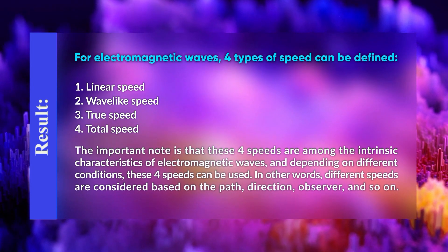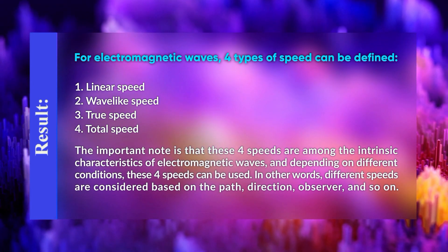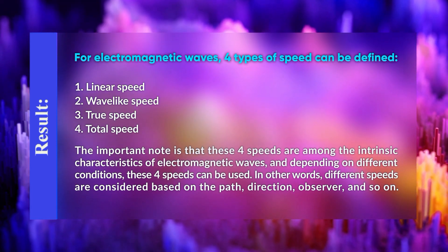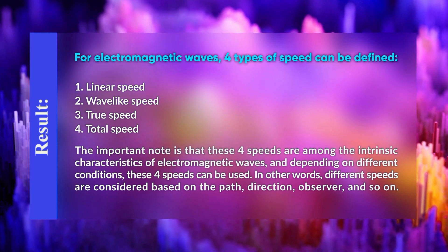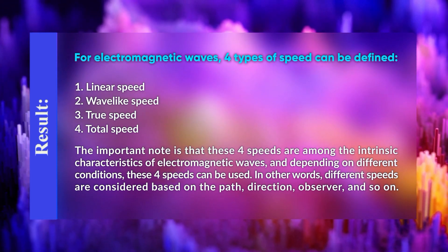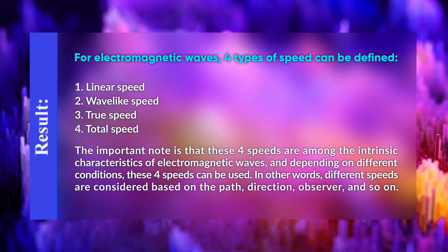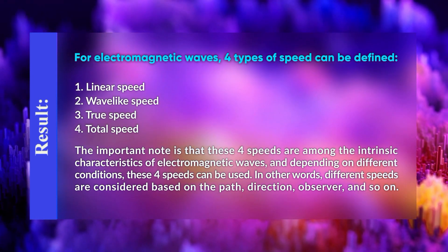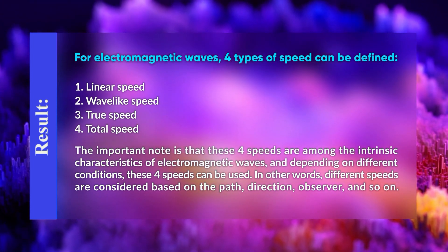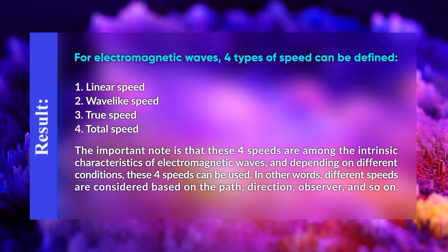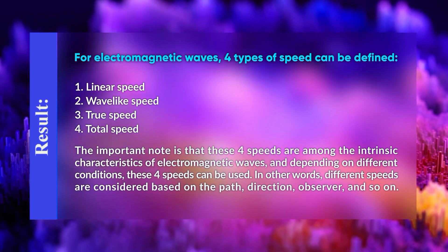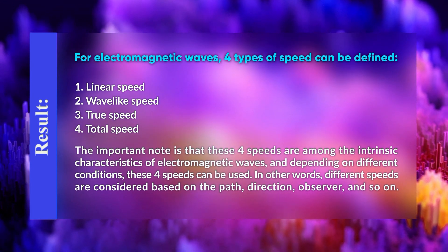As a result, for electromagnetic waves, four types of speed can be defined: 1. Linear speed, 2. Wave-like speed, 3. True speed, 4. Total speed. The important note is that these four speeds are among the intrinsic characteristics of electromagnetic waves, and depending on different conditions, these four speeds can be used. In other words, different speeds are considered based on the path, direction, observer, and so on.